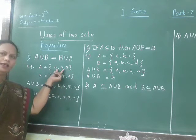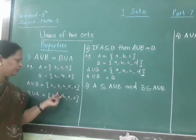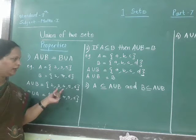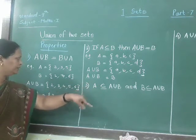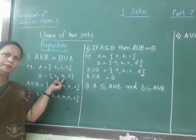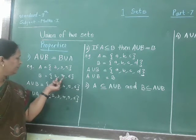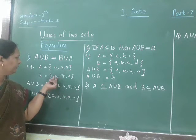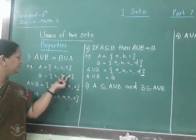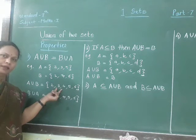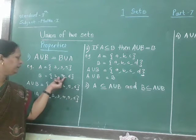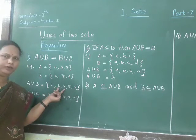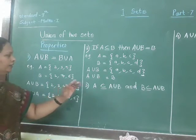All elements of A are present in A union B. And also, B is the subset of A union B. If B contains the elements 2, 4 and 6, all elements of B are also present in A union B. So here B is a subset of A union B. So this is the third property.